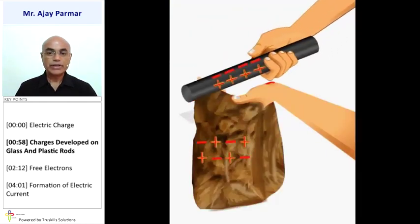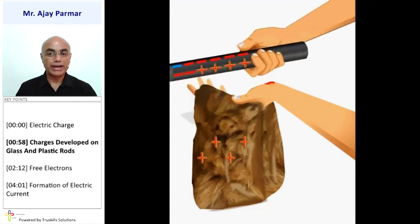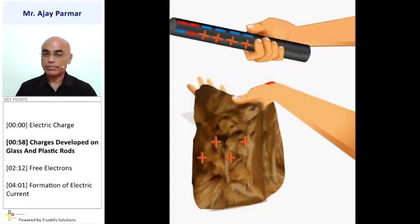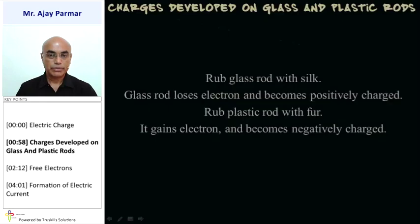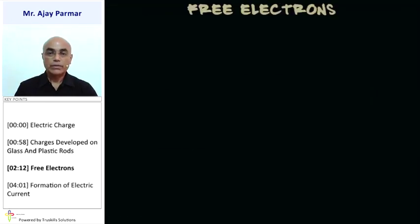The negative charges of the ebonite rod are increased while positive charges are left on the fur. When we bring the charged glass rod and the charged plastic or ebonite rod together, they attract each other.